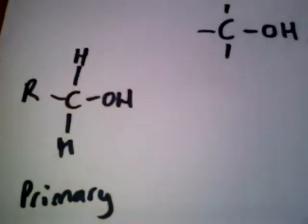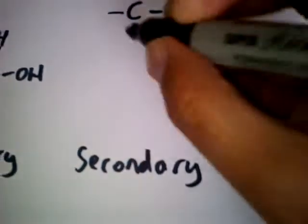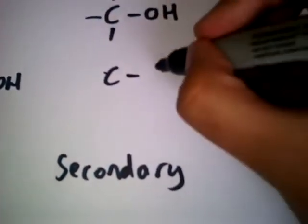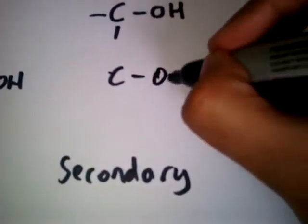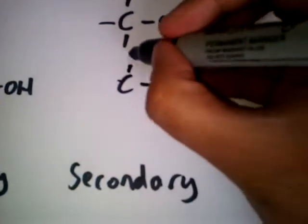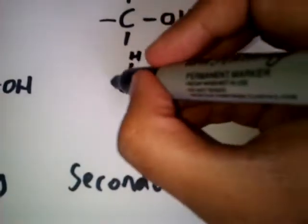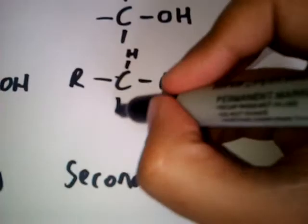It's where there is one residual group bonded to the carbon. A secondary one is where you'll have the central carbon with the hydroxyl group. It will be bonded to a hydrogen here, but there will be two residual organic groups.